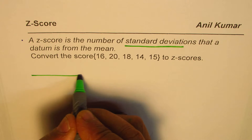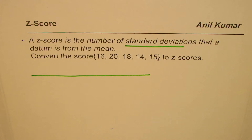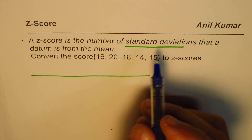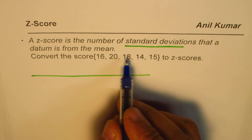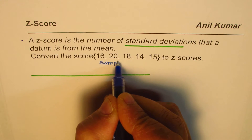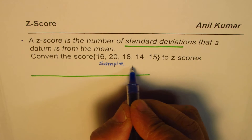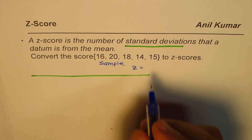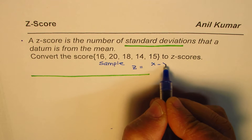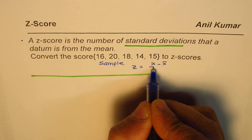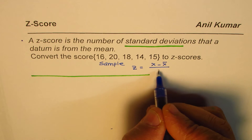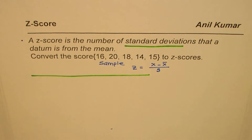We'll make a table to find the z-score. Let me also give you the formula. Depending on the data, we have to decide whether we are working with a population or a sample. In this case, we'll treat this as a sample. For a sample, the z-score is written as x minus x-bar, where x-bar is the sample mean, divided by s, the sample standard deviation. So dividing the deviation by the standard deviation tells you the number of standard deviations a datum is from the mean.